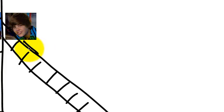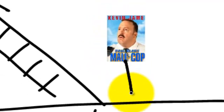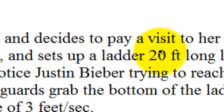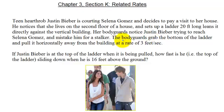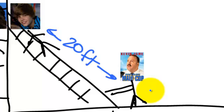I drew him there and then I'll draw him a body. The last thing we need to draw is the bodyguard, so let me do my best drawing of a bodyguard. Now I will draw him trying to pull the ladder. I drew a diagram, and the next part of this step is I need to label it. Looking across the problem for unknowns and knowns — it sets up a ladder 20 feet long. So I know the ladder is 20 feet long and I'm going to label that. The bodyguards grab the bottom of the ladder and pull it horizontally away from the building at a rate of 3 feet per second, so I'm going to label him pulling at 3 feet per second.